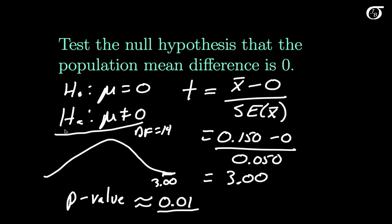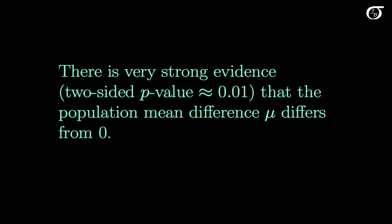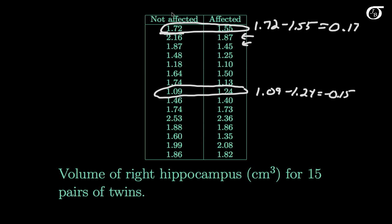Our P value is approximately 0.01. What does that tell us? That's a fairly small P value, giving pretty strong evidence against that null hypothesis. In other words, there's very strong evidence with a two-sided P value of about 0.01 that the population mean difference mu is actually different from 0. What does that mean in the context of our problem? Recall that we were taking our differences to be the not affected twin minus the affected twin. What we ended up with for our sample differences was an x bar of 0.150. The sample mean difference was 0.15 greater than 0, and this gives a strong indication that the twin unaffected by schizophrenia has a larger right hippocampus volume on average.